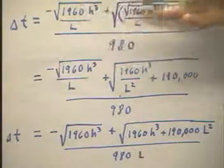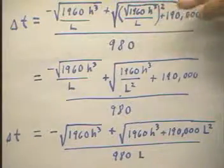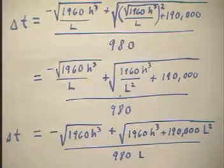Before we substituted it was a function of v naught y, but v naught y is a function of h, so we've actually formed a composite function and that's what our delta t is.